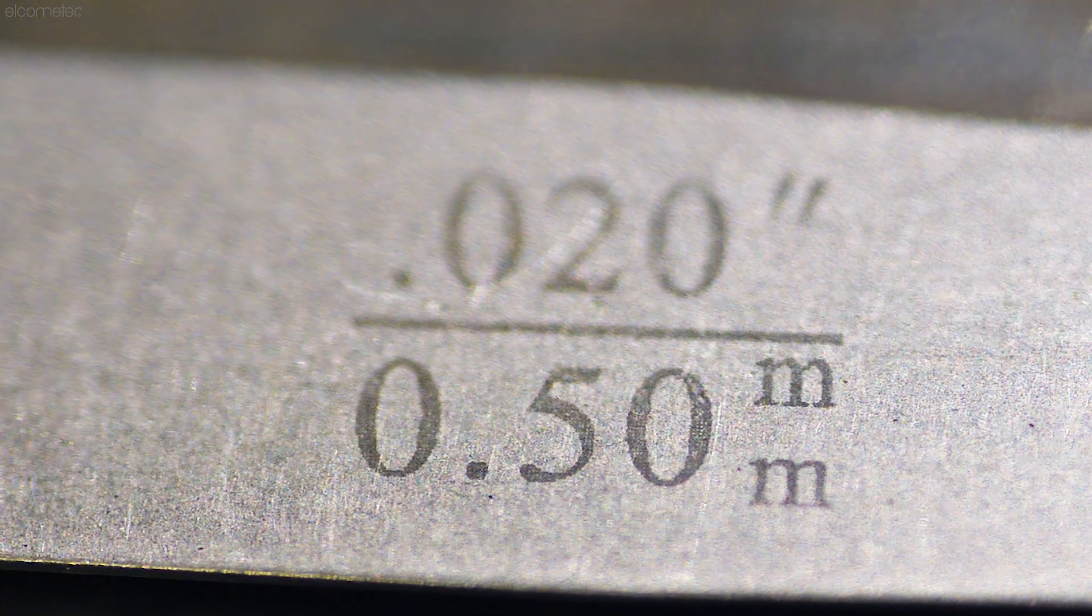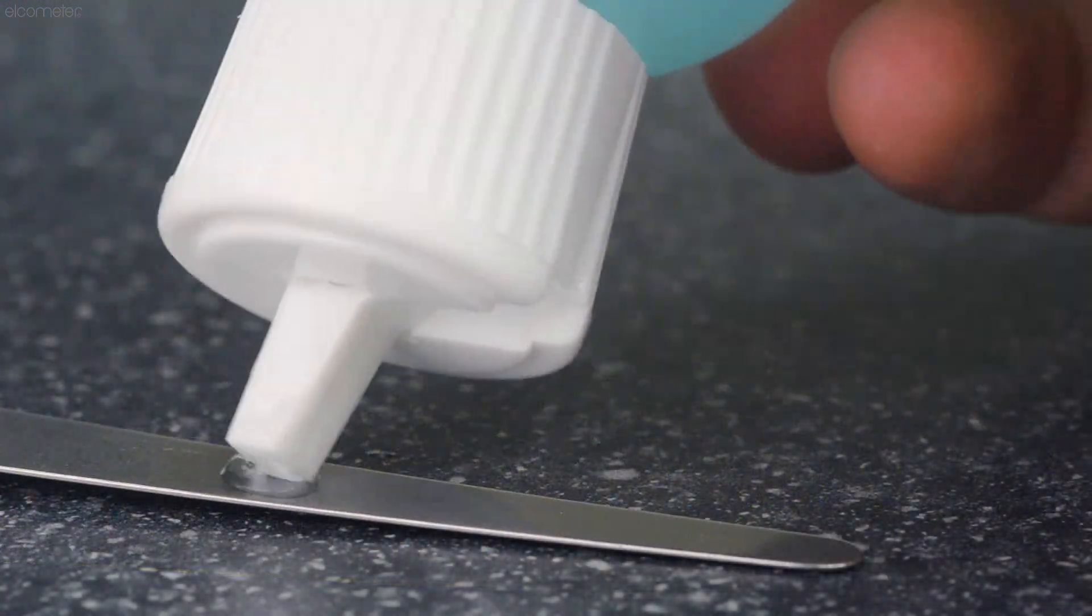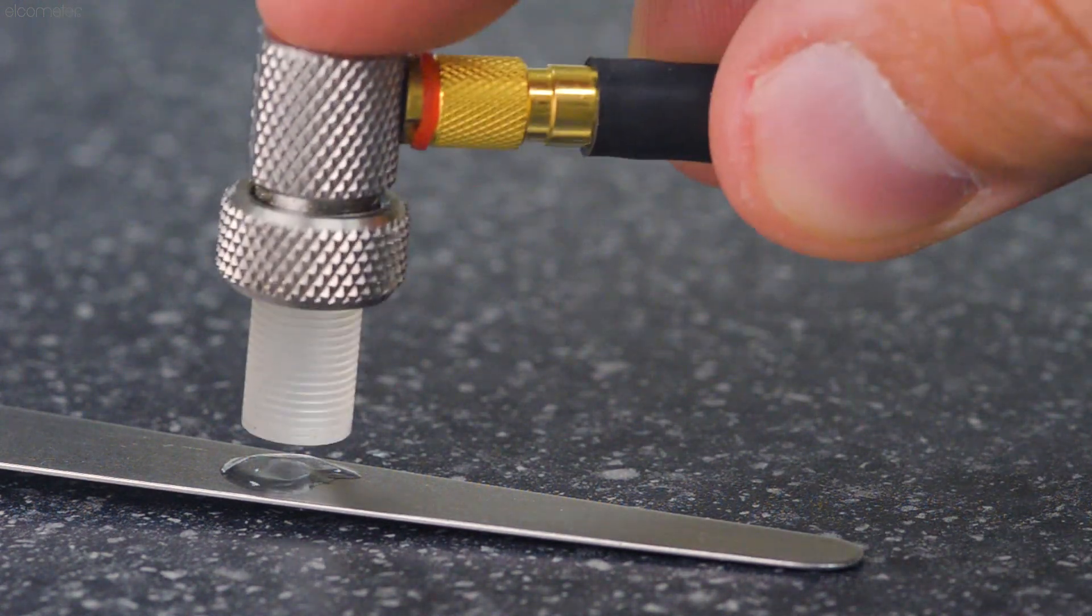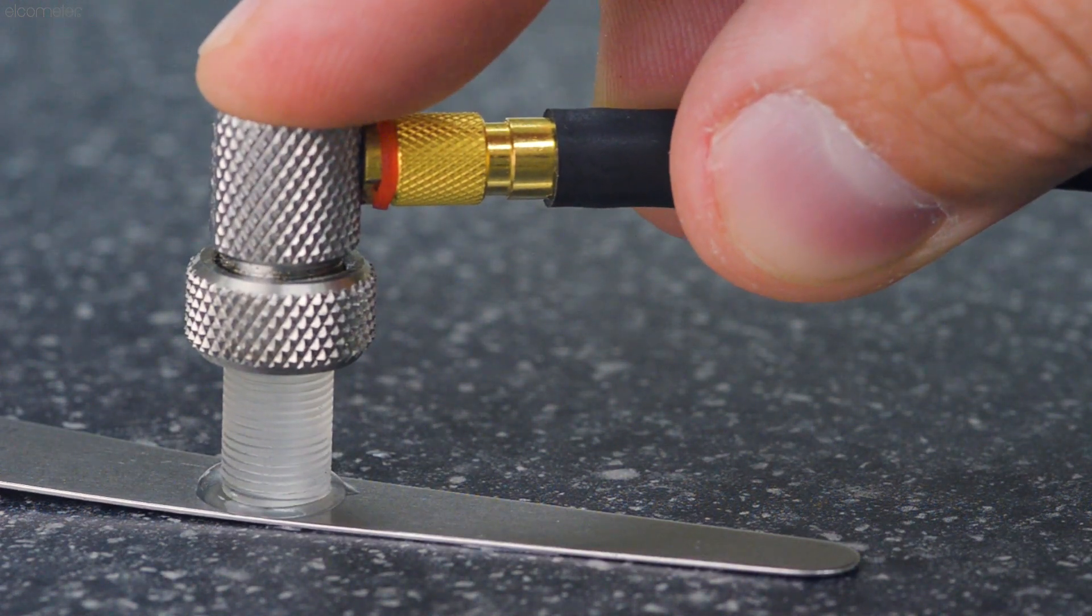Taking a reading on very thin substrates when accuracy is critical couldn't be easier. Using a very small amount of ultrasonic couplant, press the transducer flat against the surface.